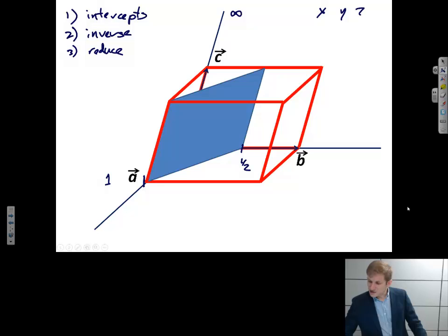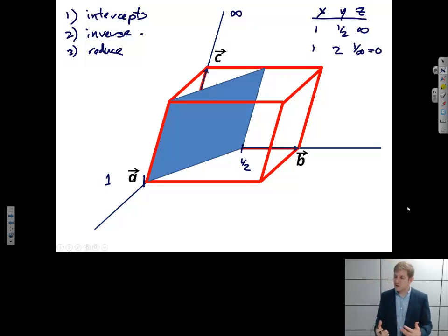So in my table, x, y, z. The intercepts are 1, 1 half, infinity. I'm going to take the inverse of these. It's the next step. 1. 1 over 1 half is 2. 1 over infinity equals 0. 1 divided by an infinitely large number is 0. I would then reduce but I notice I'm already using integers only. So I'm all set. The indices of this plane are (120) using the Miller notation.